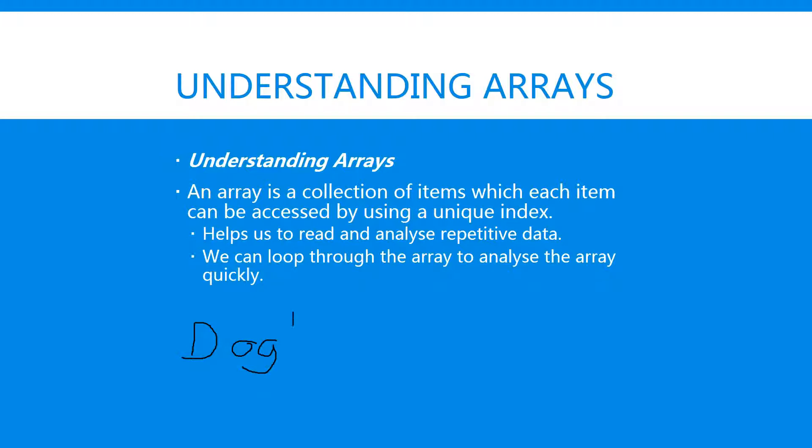Instead of declaring dog1, dog2, dog3, you can actually create something called an array. For example, dog[0] would be your start point where you could store something, and then later on you can increase that by one and loop through it.